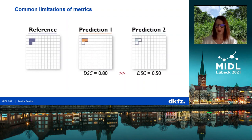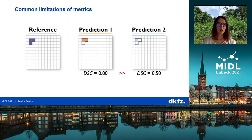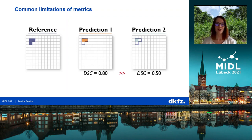For segmentation, the Dice similarity coefficient is the most frequently used metric, but it also has several drawbacks. If you want to segment very tiny structures such as brain lesions, a single pixel difference will already lead to a huge difference in the metric values, and this is often not desired.